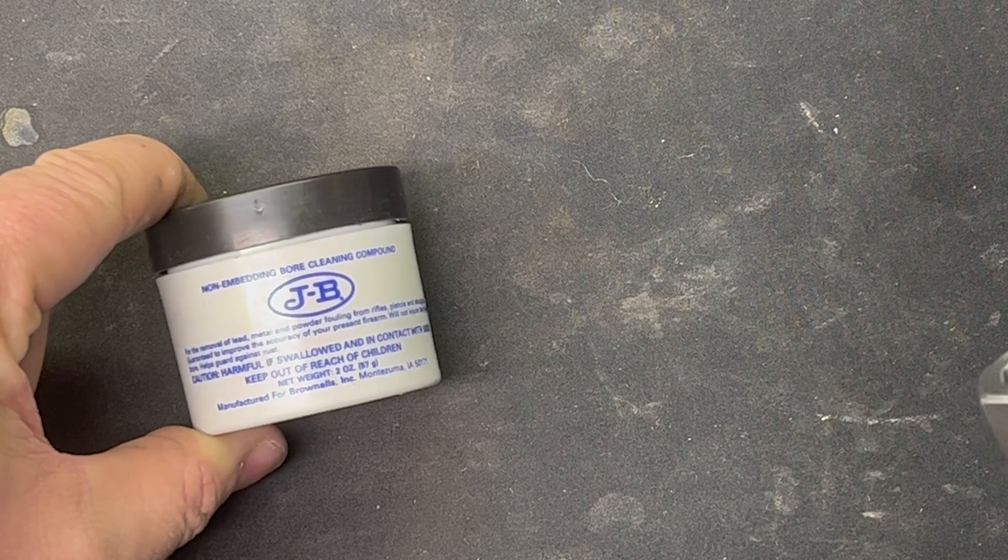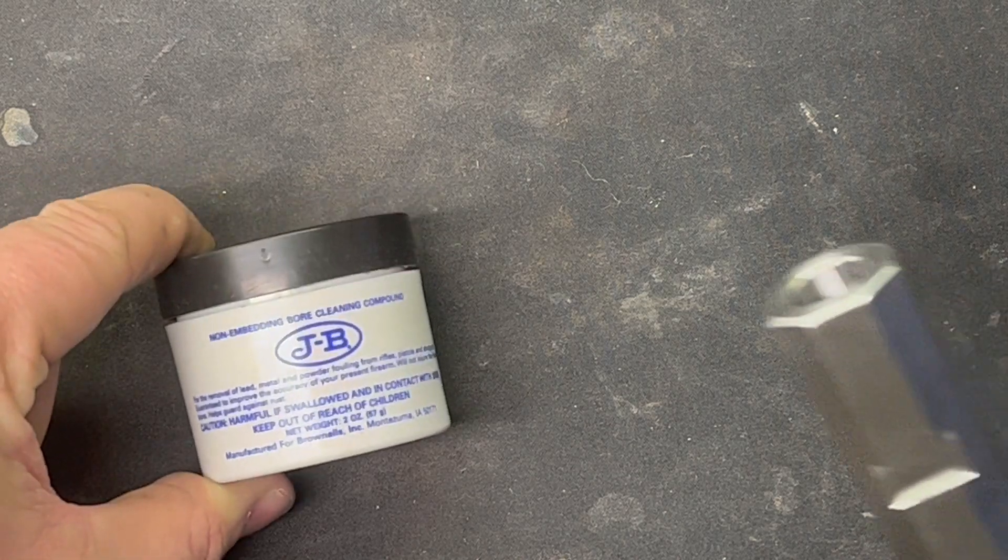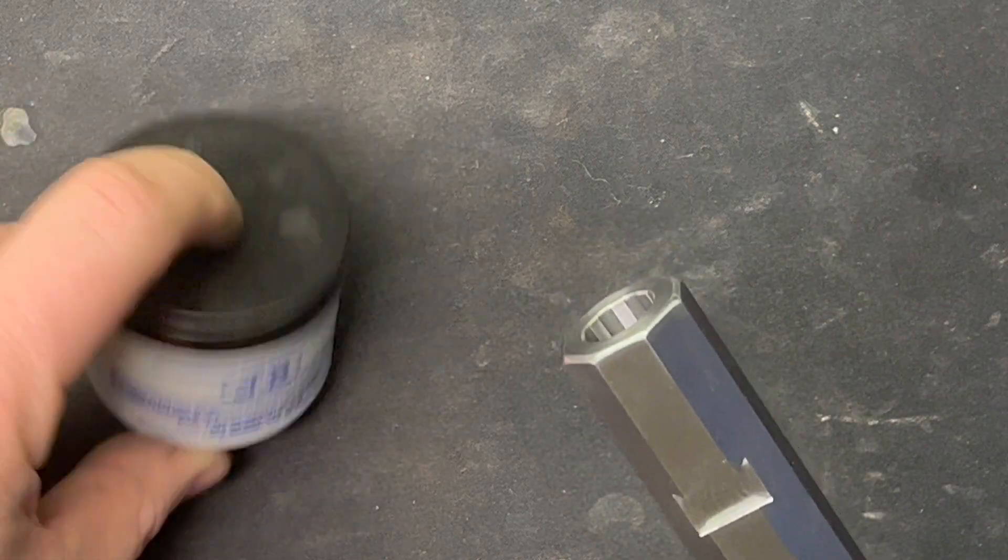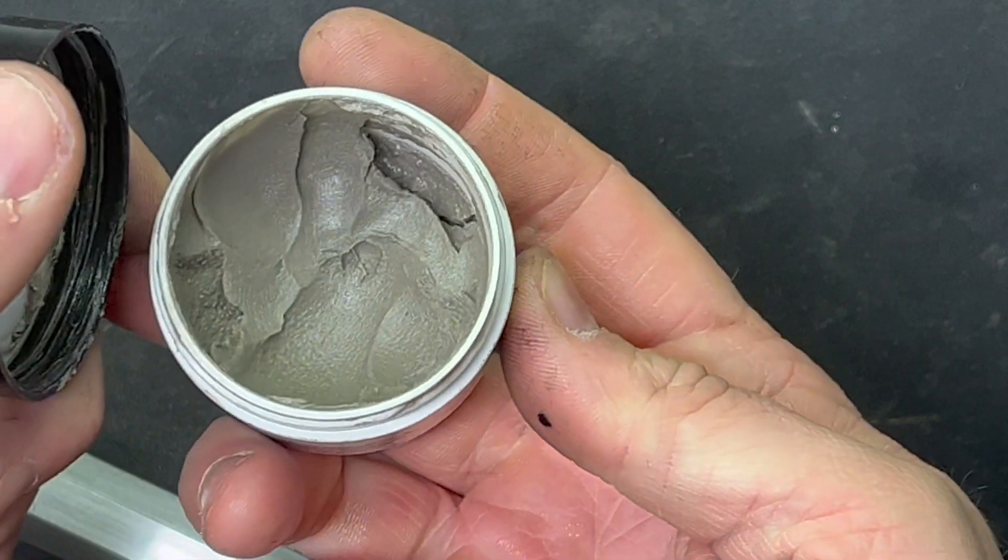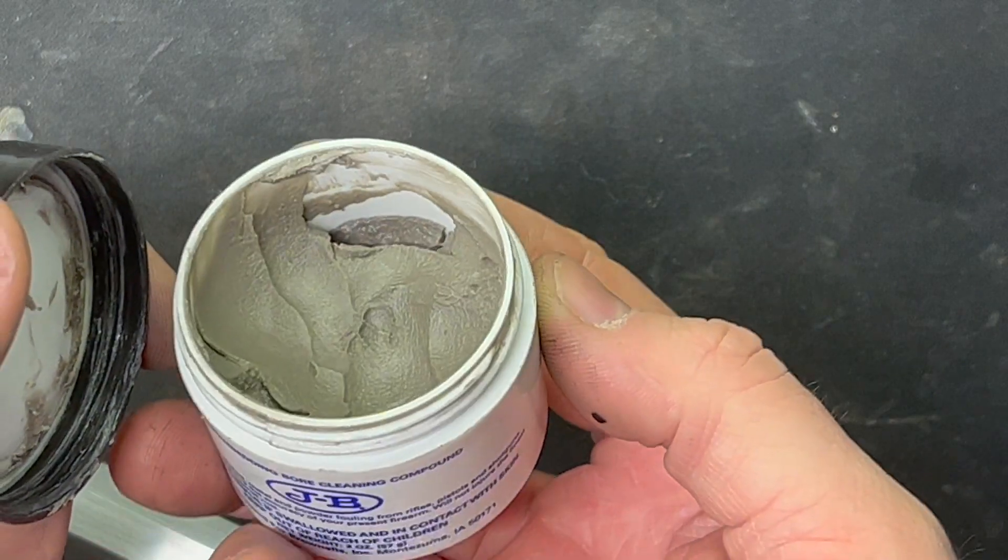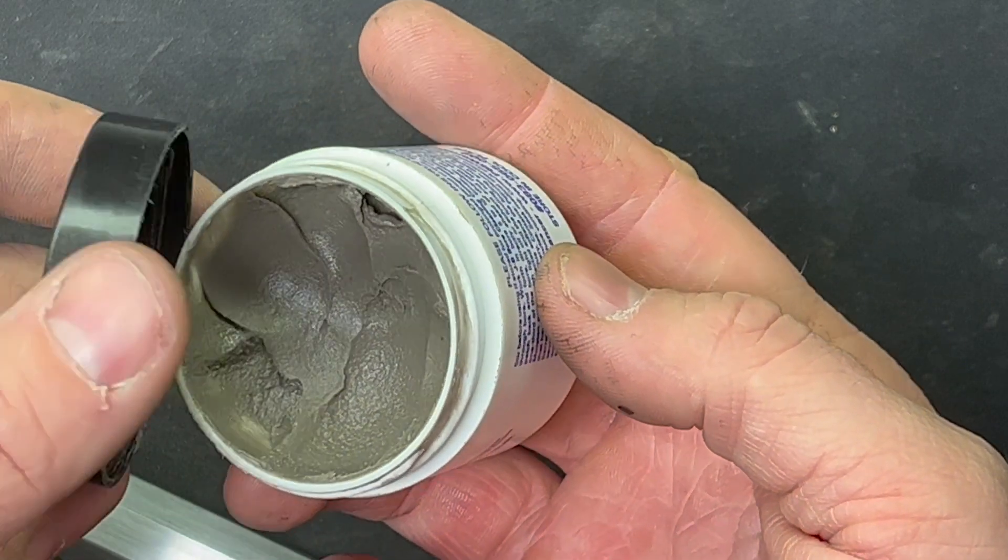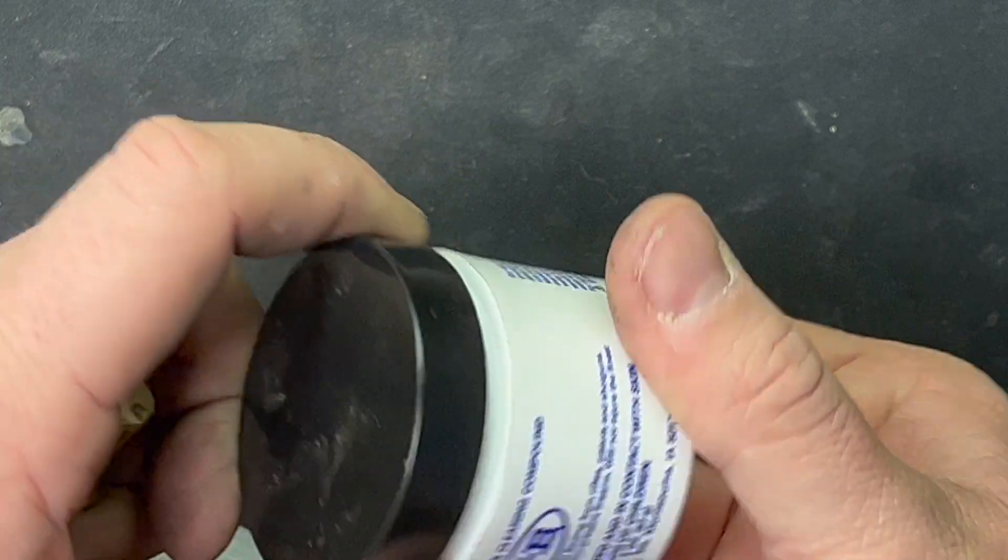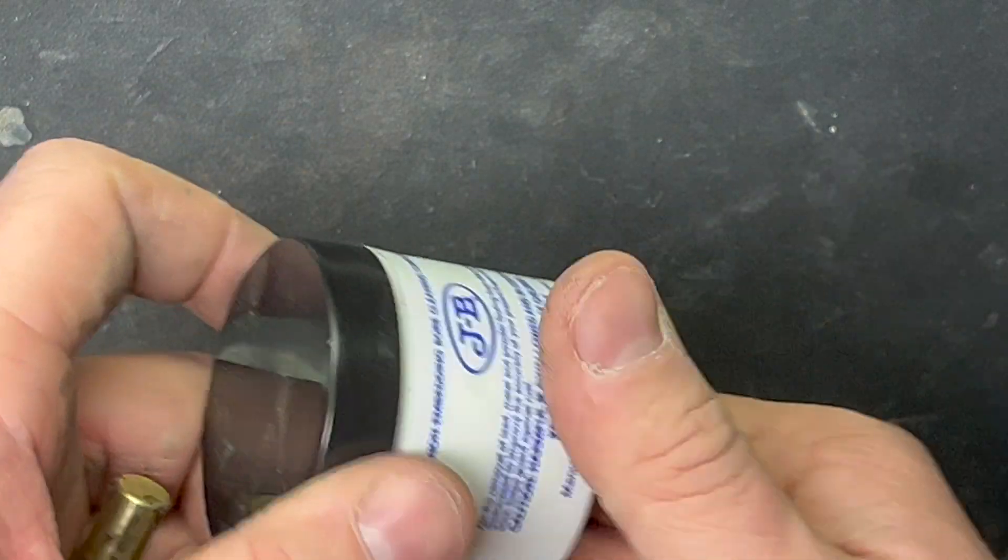I ended up using this JB bore paste which is good stuff for defouling your barrel if you got a lot of copper fouling. It's a nice fine, not quite as fine as the stuff that came with it, but it worked pretty good. It still took quite a while and several applications but we got it done.